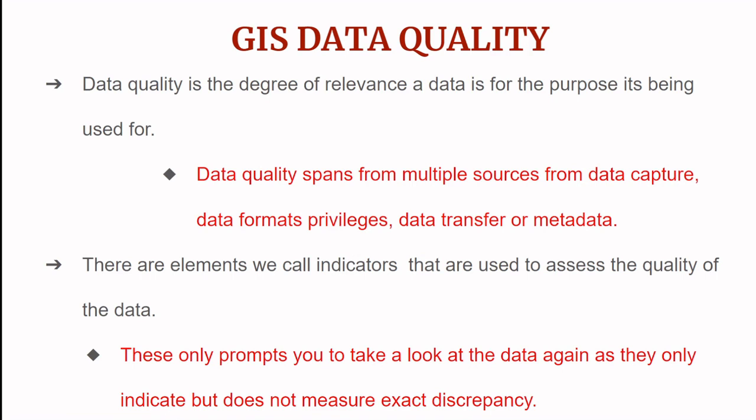When we talk about data quality, we are actually talking about the degree of relevance a data has for the purpose it's been used for. This means we do not have a perfect data — data is perfect based on the purpose it was created for. Data quality issues can span from many sources: from the time of data capture or creation, from the data format chosen, or from the transfer of data from one software to another.